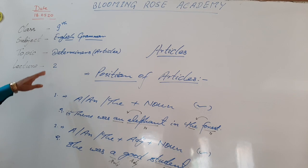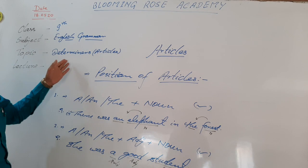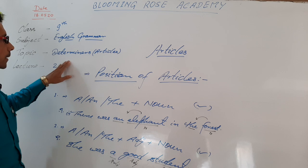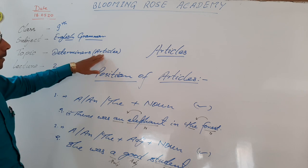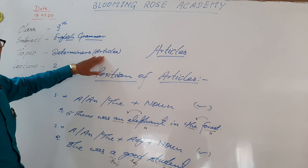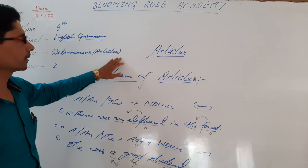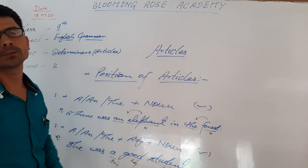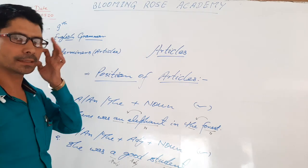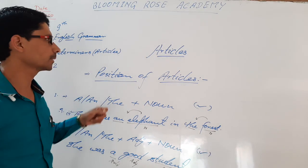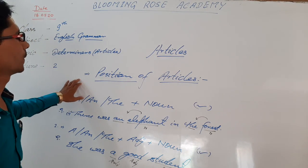Welcome back to Bloomingdale's Academy English class, class 9th English grammar. Last day, we were talking about determiners, and under determiners we were talking about the topic articles. I told you what articles are and the kinds of articles — articles are three types. Today, we will see the position of articles.